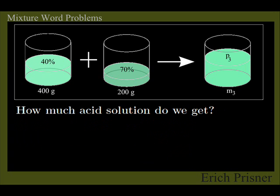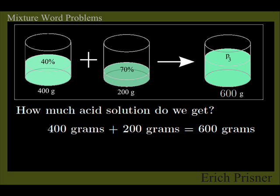I think the first part of the question is easy to answer. Mass does not vanish, so the mass of the mix is the sum of the masses of the ingredients, so it is 400 plus 200 equals 600g.